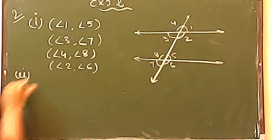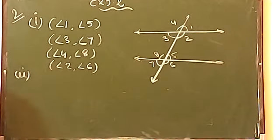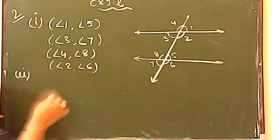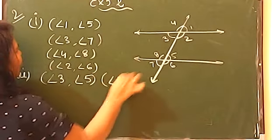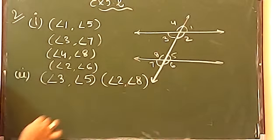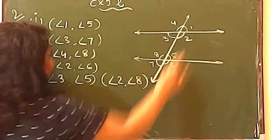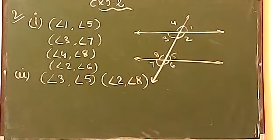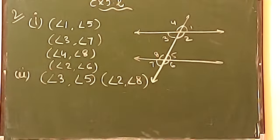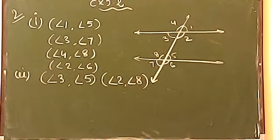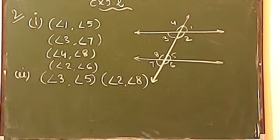Move on to the second question: the pair of alternate interior angles. You are talking about Z shape. So remember, 3 will go with 5 and 2 will go with 8. Now remember, if alternate exterior angles were asked, you would pair 4 with 6 and 1 with 7. And remember, whenever you are writing the pairs, please make sure brackets are compulsory — write it down in the form of a bracket.